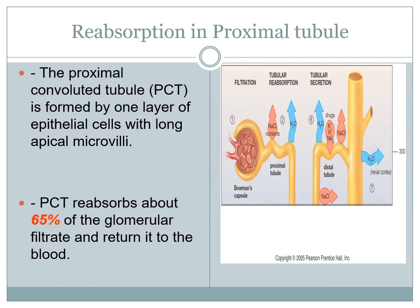Once all the fluid is pushed into the kidney, we start the reabsorption process. The proximal convoluted tubules are the main area in which reabsorption and secretion occur. 65% of all filtrates that have been pushed through are returned to the blood within the proximal tubule area. This area is held together by epithelial cells with a lot of microvilli, which help facilitate movement of fluid and contain specialized protein structures that allow for reabsorption.